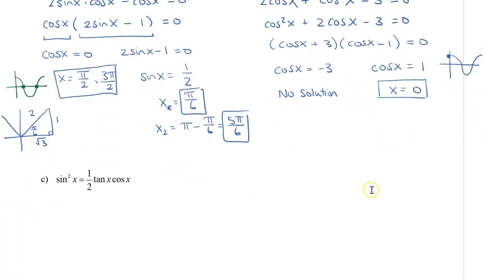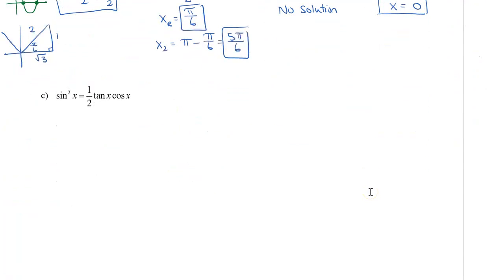All right, let's take a look at one more. So here we have sine squared x is equal to half tan x times cos x. So we have three trig functions here, which isn't so nice. So let's see what we can do. Let's first take our tan x and let's change that to sin x over cos x and that's times cos x and that's great because now my cos x's can cancel off.